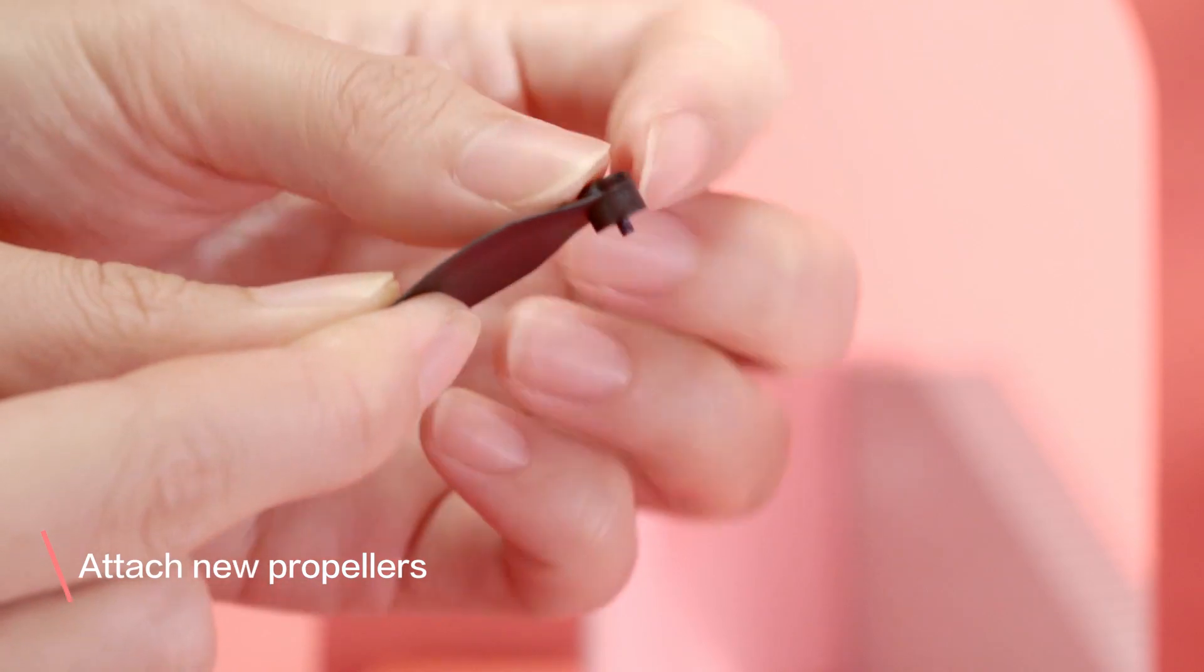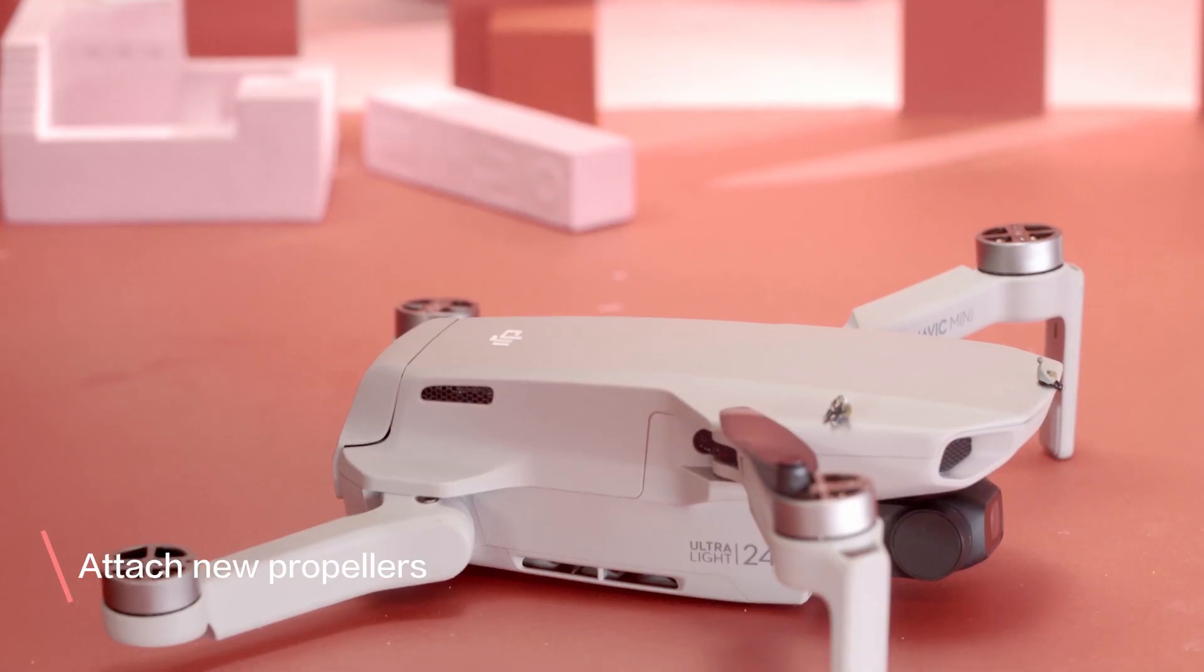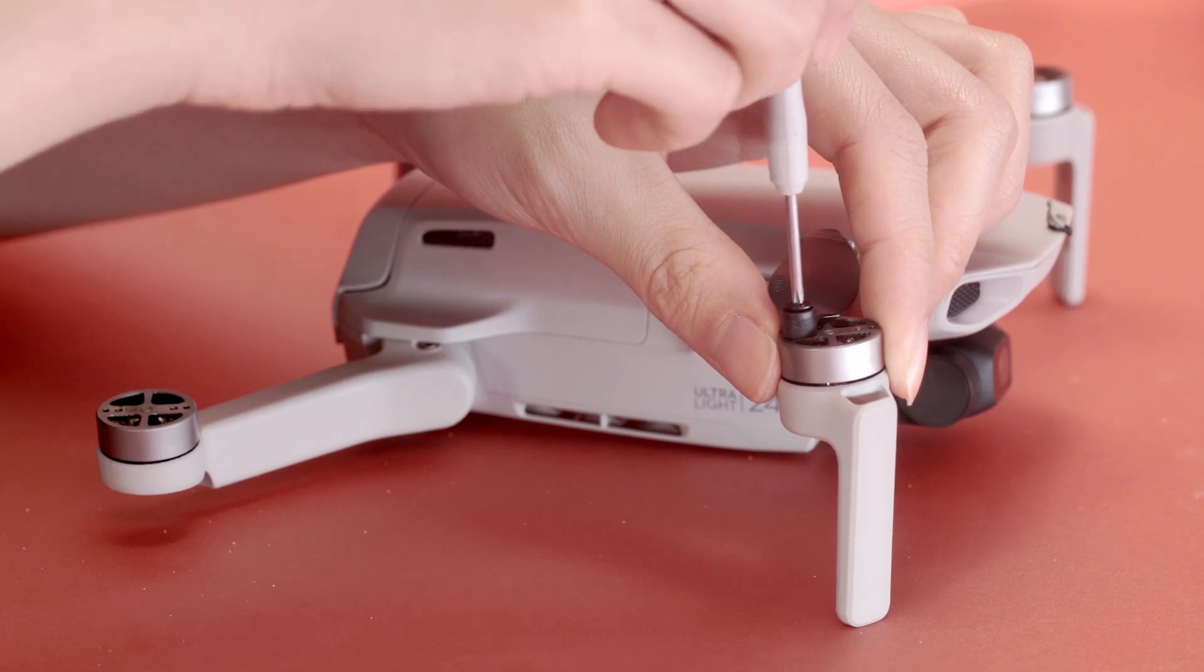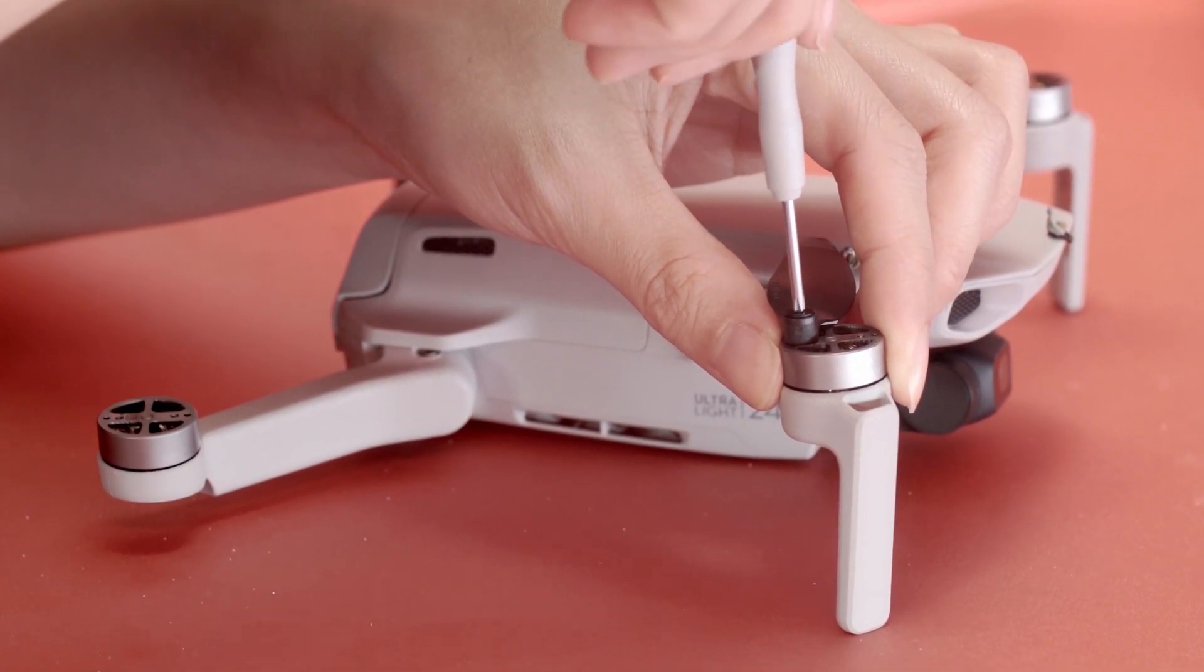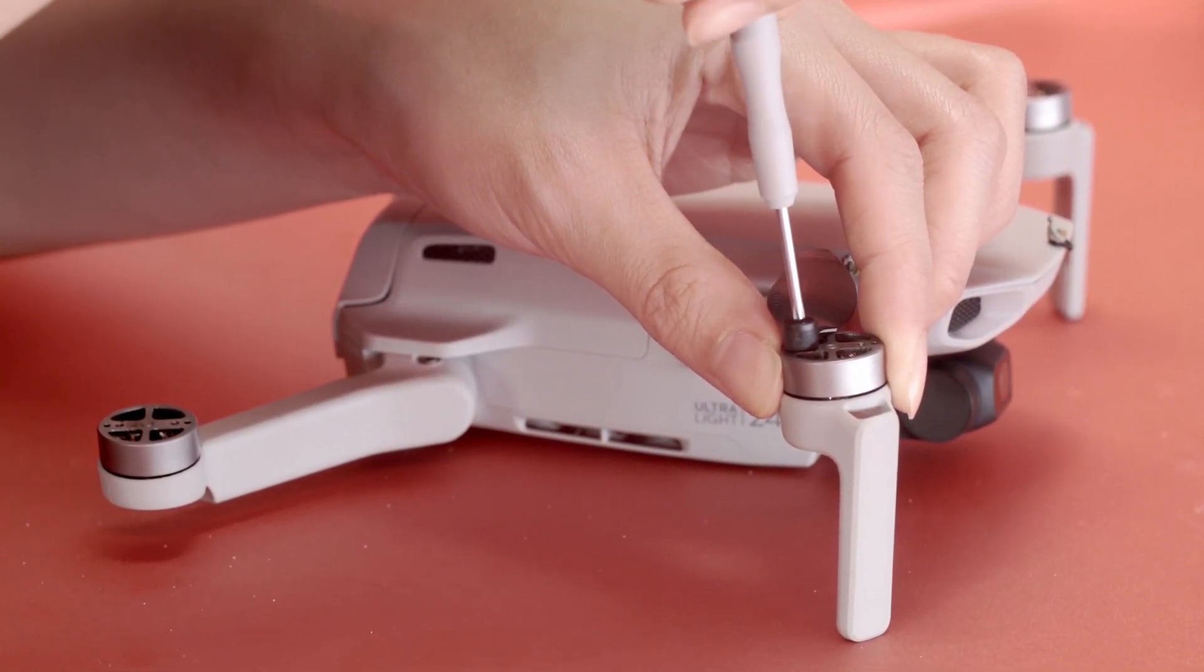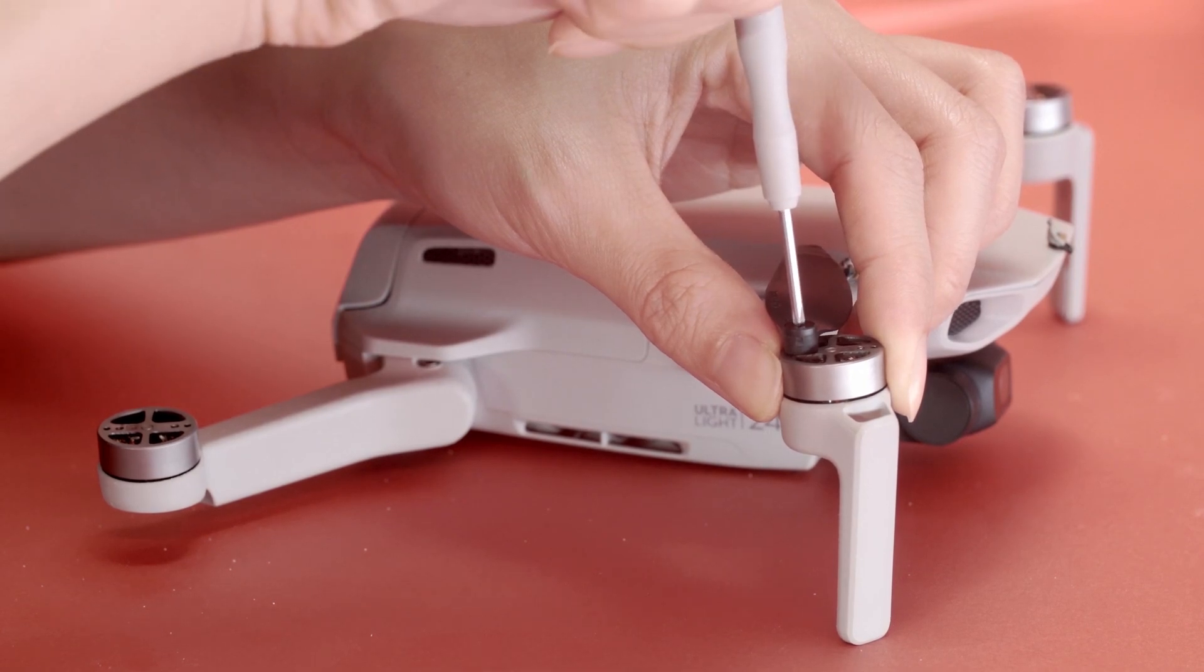Place the new screws into the screw holes of the propeller and insert the screwdriver into the screw's cross recesses. Align the screws properly and rotate the screwdriver clockwise until the screws are secure.